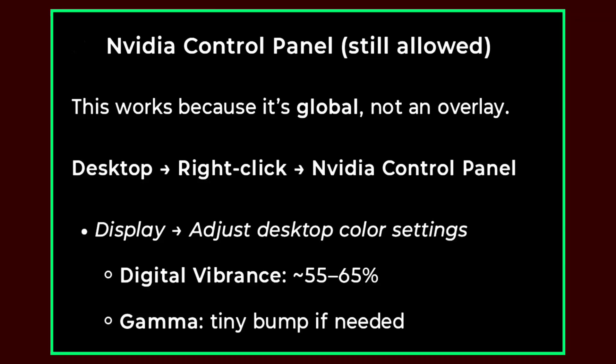The Nvidia Control Panel is still allowed because it's global, not an overlay. Go to your desktop, right-click, open Nvidia Control Panel, then go to Display, then Adjust Desktop Color Settings. Set Digital Vibrance to 55–65 percent and give Gamma a tiny bump if needed.